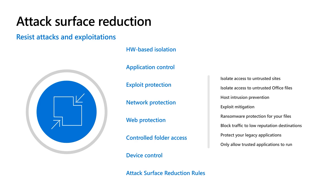Application Control has generally been hard to manage — this sort of application trust model. So what we've done to make it easier is a concept called the Managed Installer. If you're using Config Manager or Intune to deploy your applications, we can basically tell Application Control that if an application gets installed by one of those tools, it's trusted. So instead of having to re-cut an image, we just deploy it through your standard infrastructure and it will be trusted, which makes lifecycle management much easier. We also enabled Intelligent Security Graph Integration.